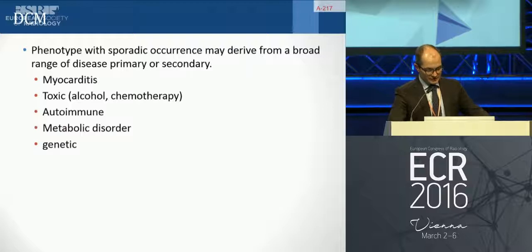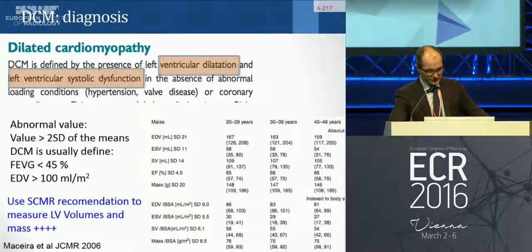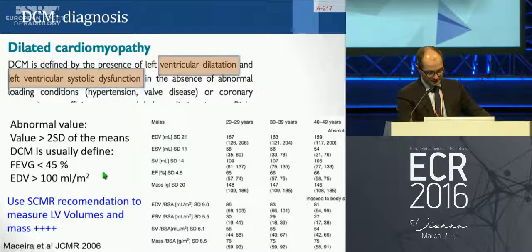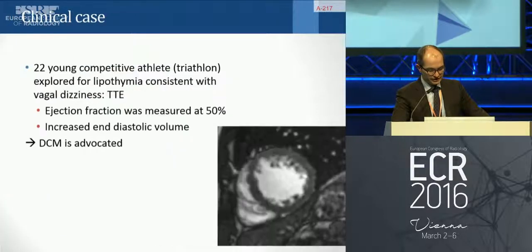The phenotype of dilated cardiomyopathy can be sporadic, and many diseases can cause it: myocarditis, toxic, autoimmune, metabolic disorder, or genetic disorder. The definition of the dilated phenotype is based on measurements — the presence of left ventricular dilatation and LV systolic dysfunction. Refer to the SCMR recommendations for LV volume and mass measurement, as all the numbers are based on your measurements — it is really important to have a precise method.